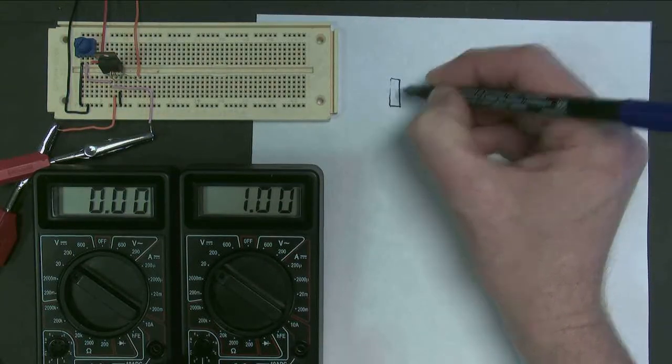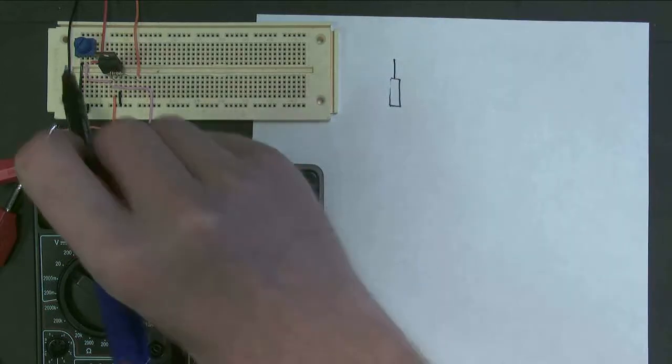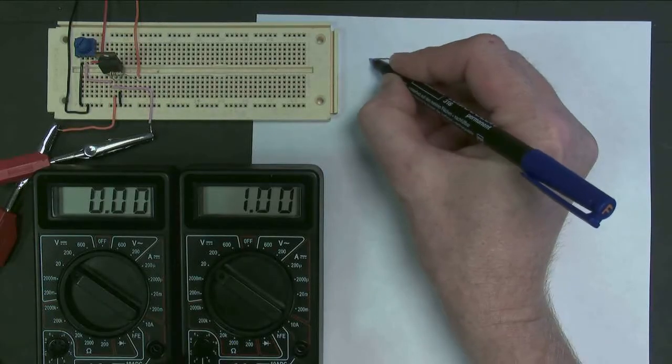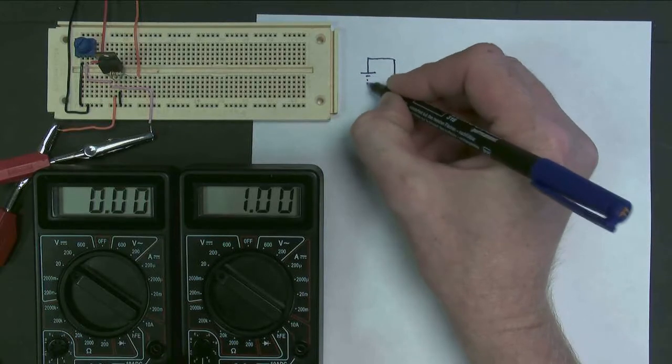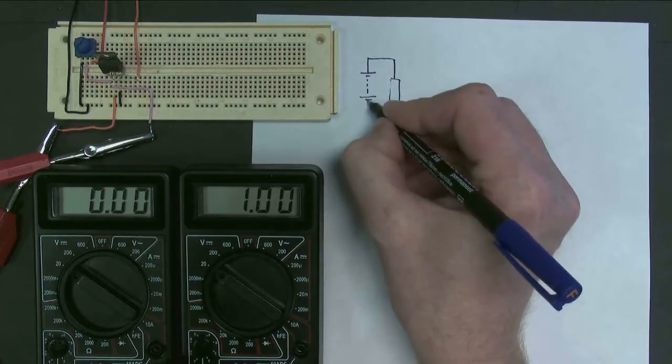So I've got a potentiometer, which is this blue device here, connected to a battery pack, which is off the screen, which you can't see.